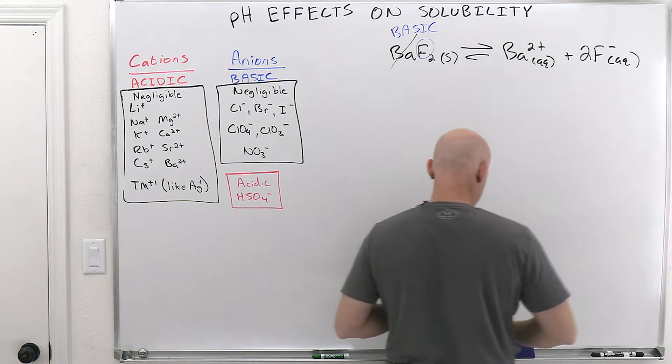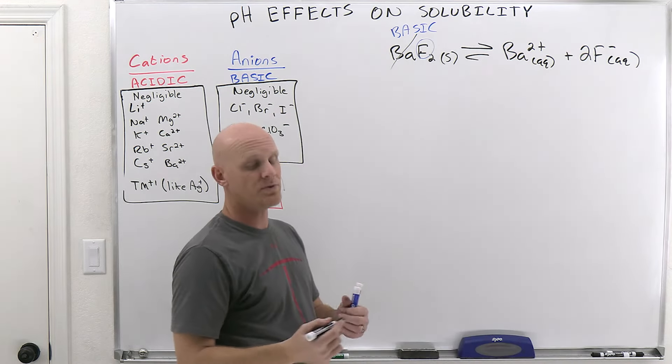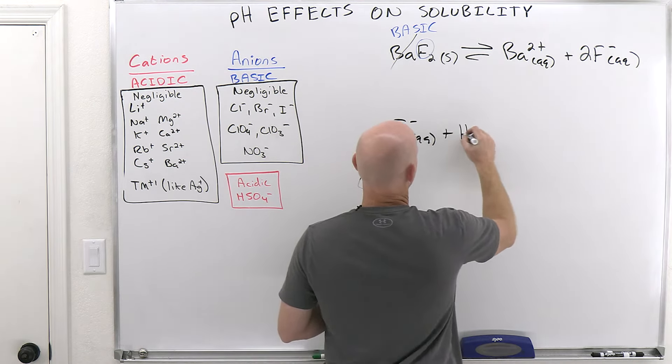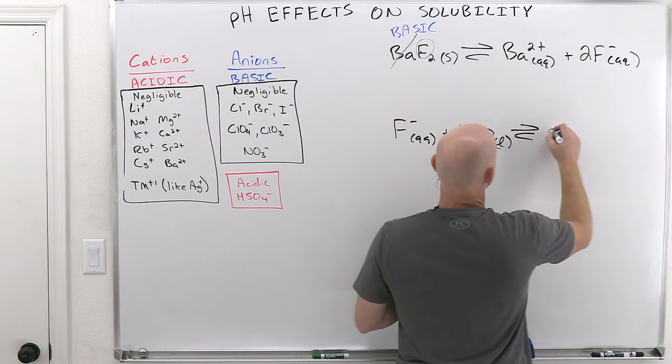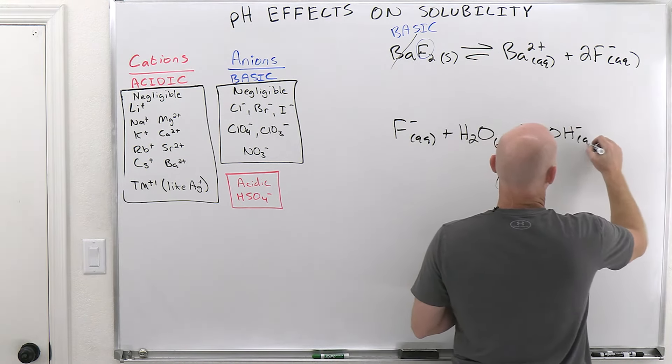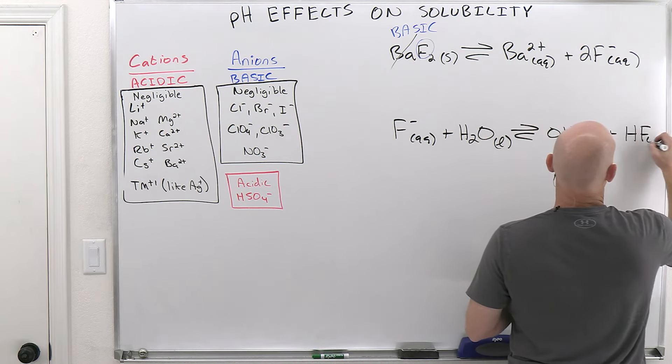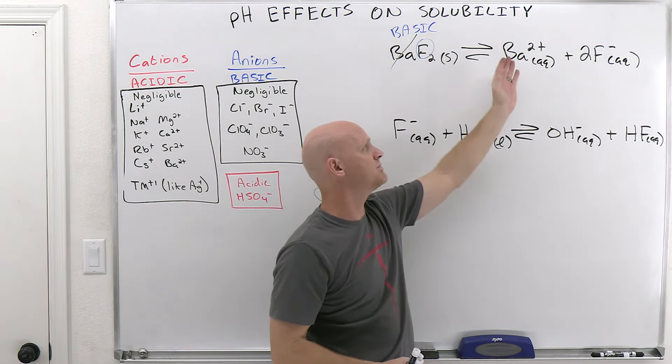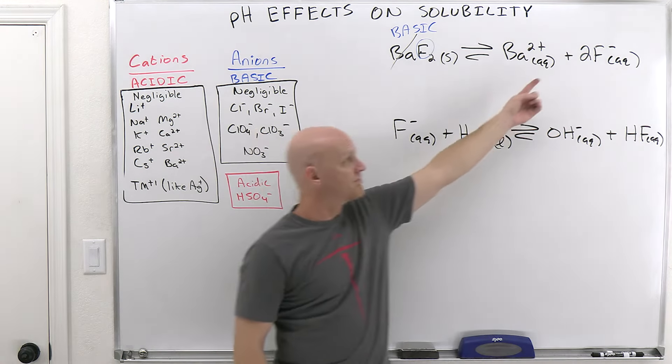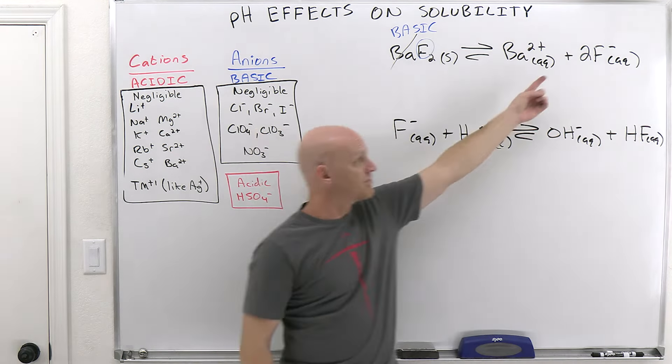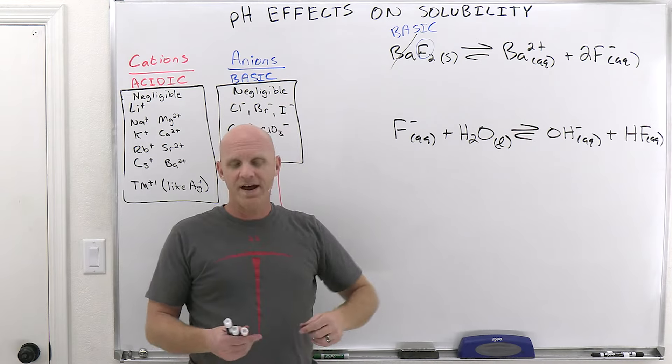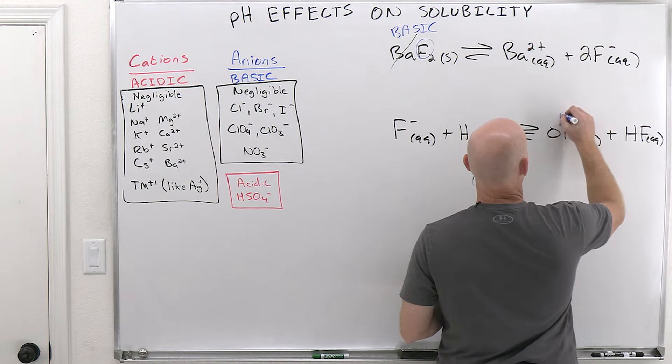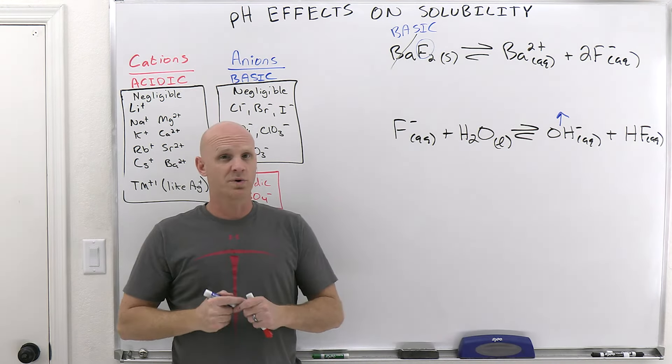So it turns out what you've really got going on here with that barium fluoride is you actually got multiple equilibria going on because fluoride is a base. And what do bases do? Well, they react with water to produce some hydroxide and the conjugate acid. And so in this case, you've got the barium fluoride dissociating to produce barium and fluoride ions, but then you have some of those fluoride ions you just produced reacting with water to form hydroxide and HF. And so what happens when you have a basic solution? Well, a basic solution has more hydroxide than a neutral solution or an acidic solution.